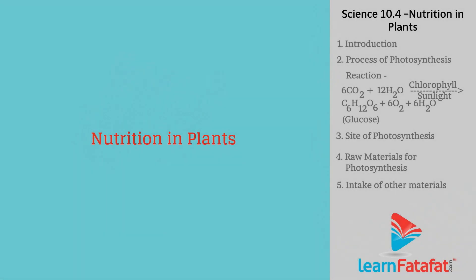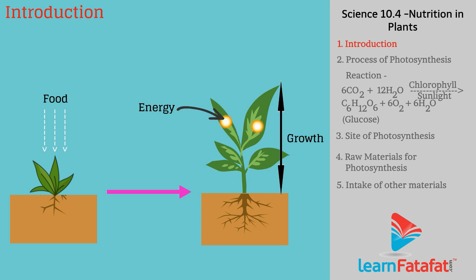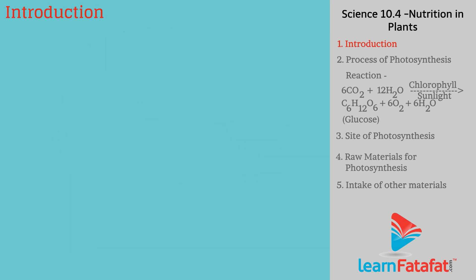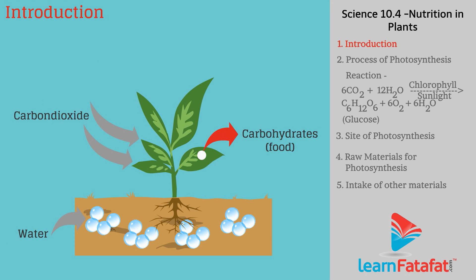Nutrition in plants. Plants need food for energy and growth. Green plants obtain food by the process of photosynthesis. Plants absorb atmospheric carbon dioxide and water and convert this into food, i.e., carbohydrates, in the presence of chlorophyll and sunlight.